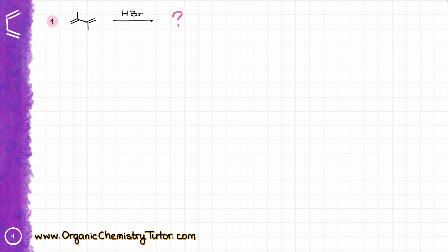Here is my first example. The first thing I'm going to do is redraw this molecule so I can work through the mechanism. The mechanism here is going to start just like we would expect with the electrophilic attack — the electrons from the double bond go onto the proton, then the electrons between the hydrogen and bromine go onto the bromine, and that is going to give me my first carbocation.